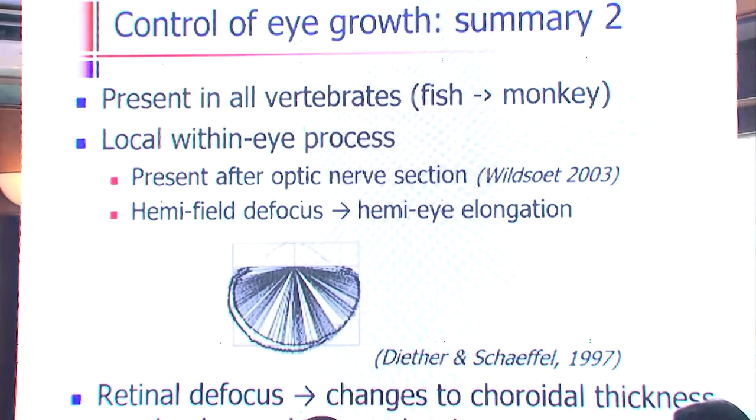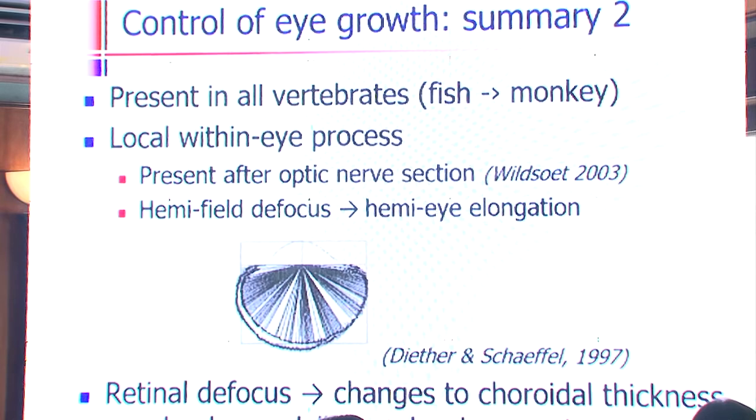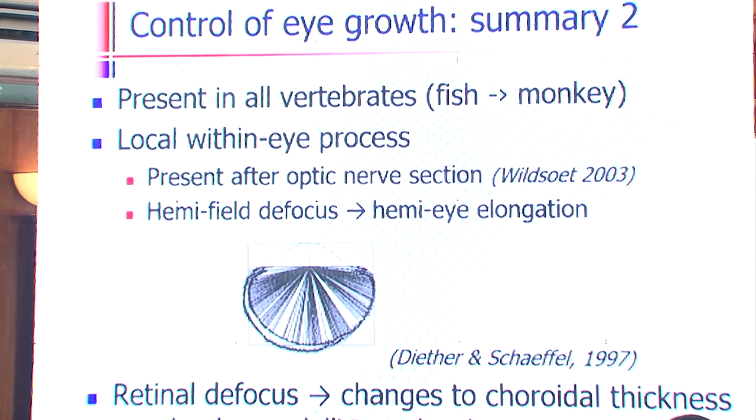This emmetropization process is present in all animals that have been examined, from fish to monkeys. The most interesting thing about it is that it's a local, within-eye process. It's present even in a chick — even if you cut the optic nerve so that no information can go to the brain, the eye will still control its growth and respond to defocus. Whatever is controlling the eye's growth is within the eye itself; it has nothing to do with the brain at all.